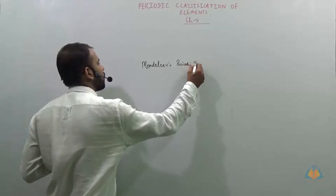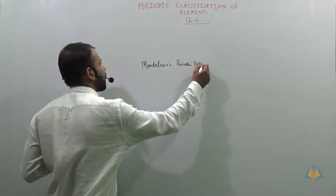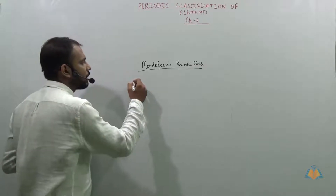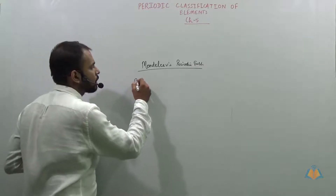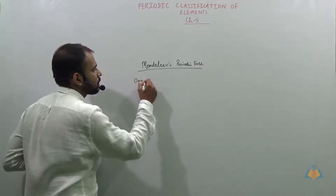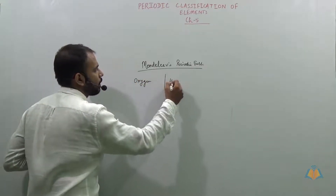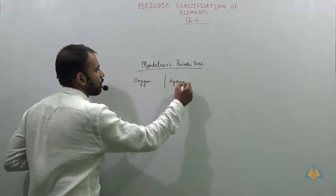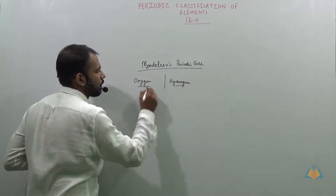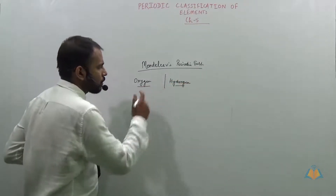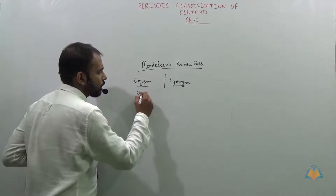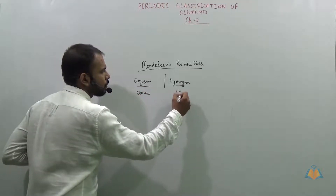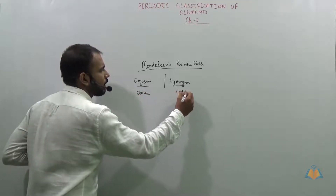Mendeleev's periodic table. What he did was that he made many elements react with oxygen and hydrogen. In the case of oxygen, they would form oxides, and in the case of hydrogen, they would form hydrides.